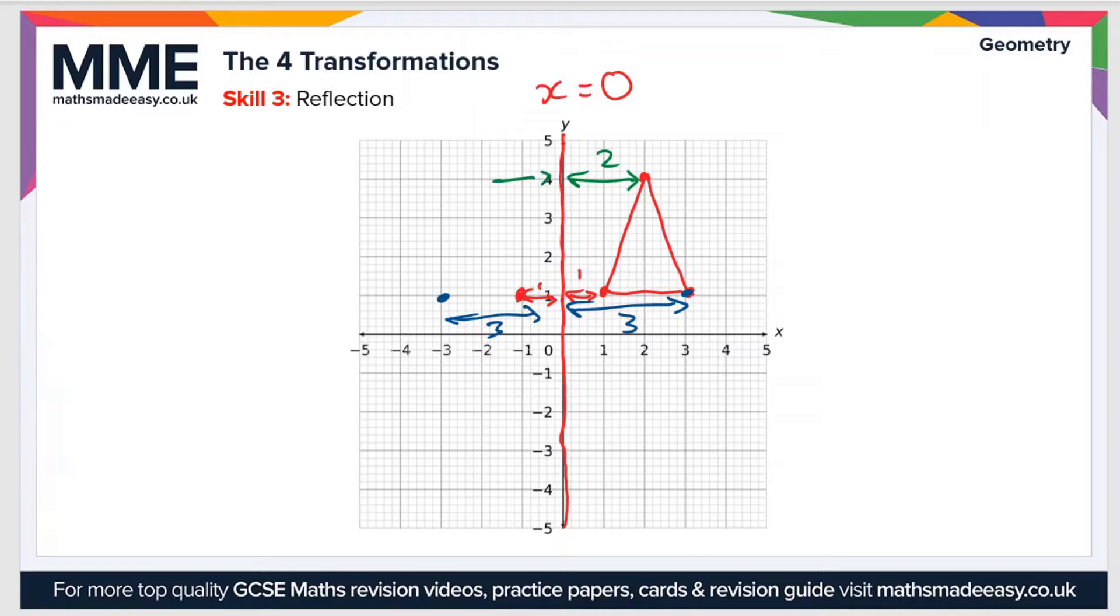If we redraw the triangle over here, you can see that it is perfectly reflected in this line x equals zero. You can think of the line x equals zero as like a mirror, so the two shapes are now mirror images of each other.